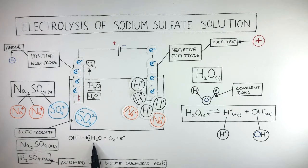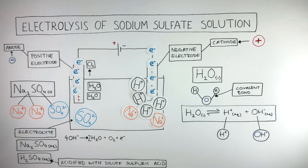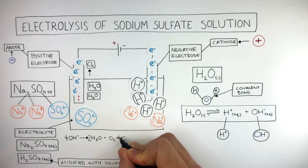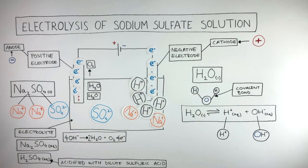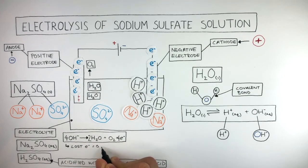There are now four hydrogens on the right and four oxygens on the right, so we put a 4 in front of the OH- to balance the number of atoms on each side. The charges also need to be balanced — there is now a charge of 4- on the left, so we put a 4 in front of the electron on the right to balance the charge. As the hydroxide anions have lost electrons, oxidation has taken place.